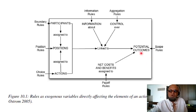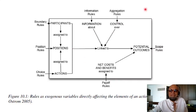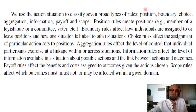The potential outcomes are governed by scope rules and net costs and benefits are assigned by payoff rules. Look at this again and make sure you understand — this is something you do intuitively all the time but without paying attention to what the boundary rules are, what position rules are, what choice rules are, and what information you are getting and why. But overall, you know what role you are playing in the action situation from morning to evening, based on your job and your qualifications that got you the job.